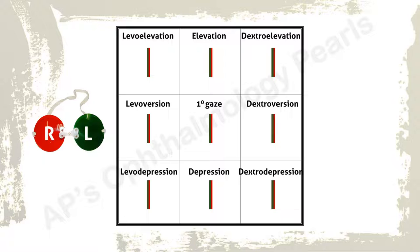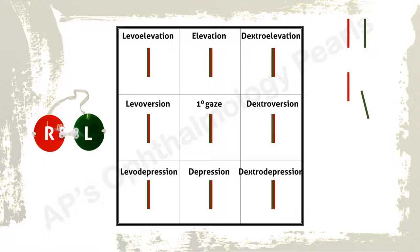If there is diplopia, one should first determine the diagnostic gaze in which there is a maximum separation of images. If there is no evidence of vertical diplopia, this indicates a horizontal muscle palsy and one should look for maximal horizontal separation. If there is vertical diplopia, this indicates a vertical muscle palsy — either rectus or oblique — and the gaze with maximal vertical separation should be looked for.